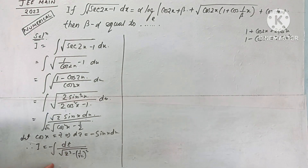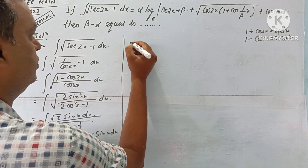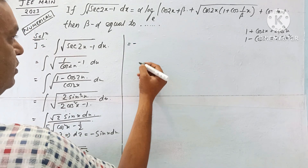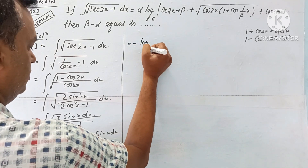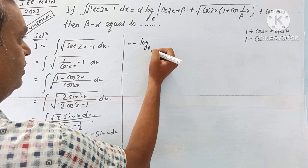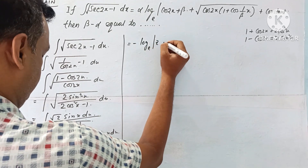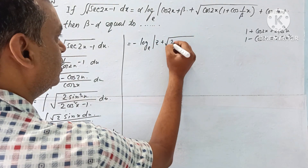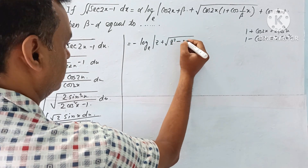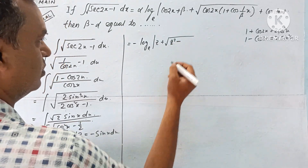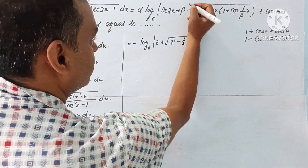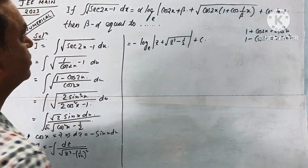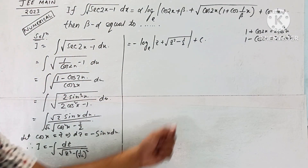This is a standard form. The integration of 1/√(z² - a²) dz = log|z + √(z² - a²)| + C. So I equals minus log|z + √(z² - 1/2)| + C.